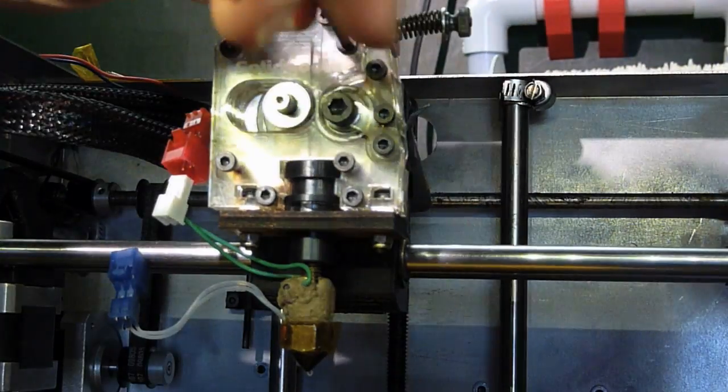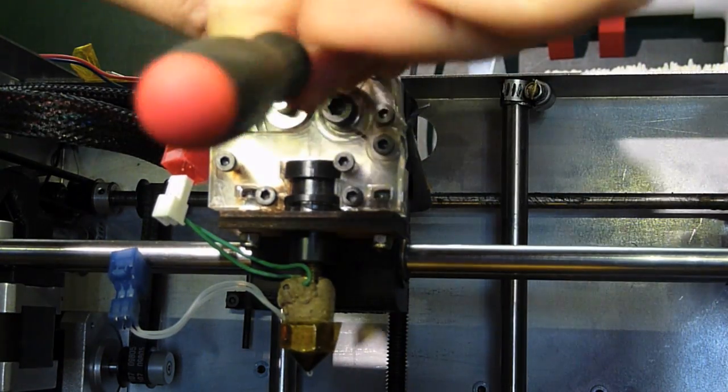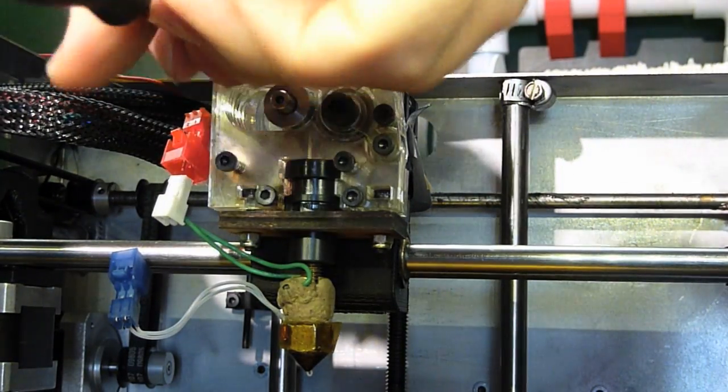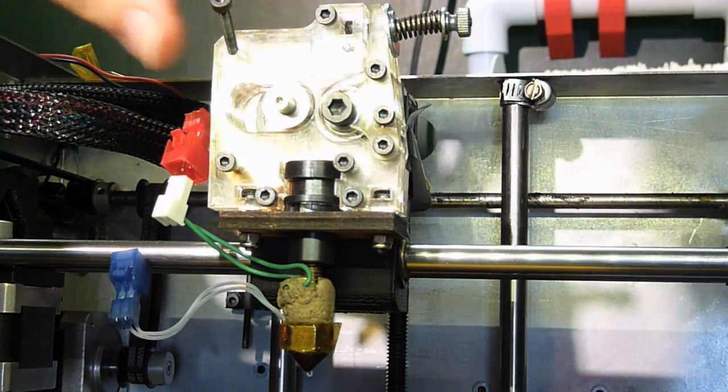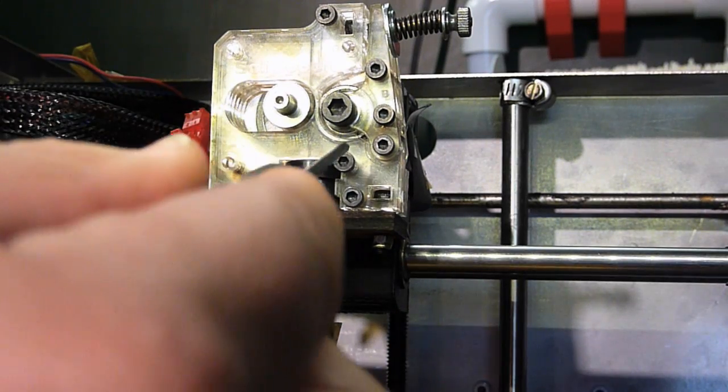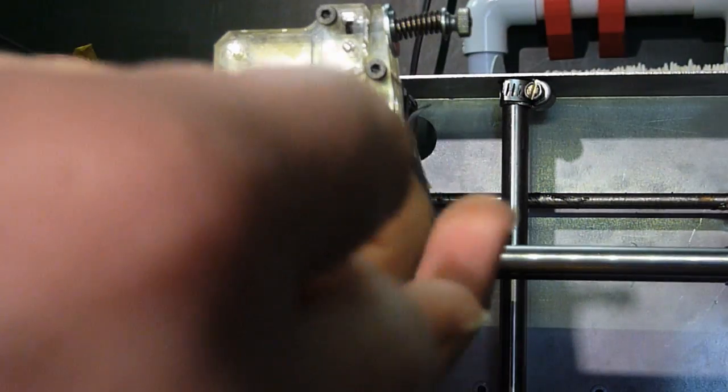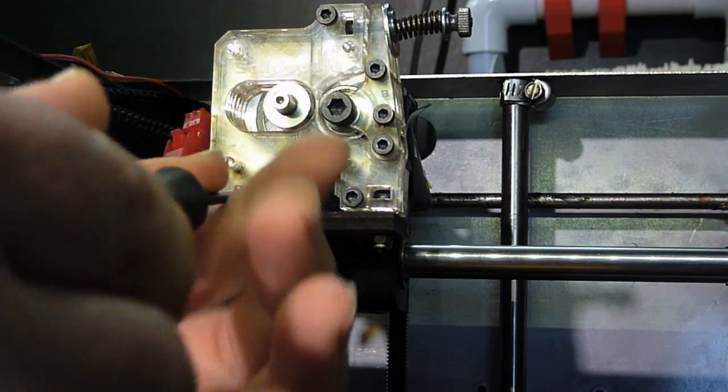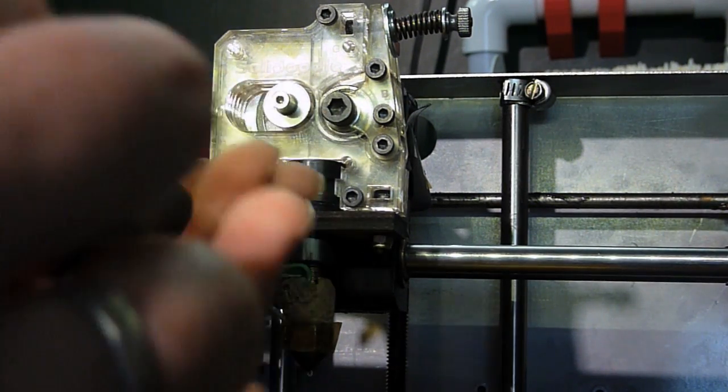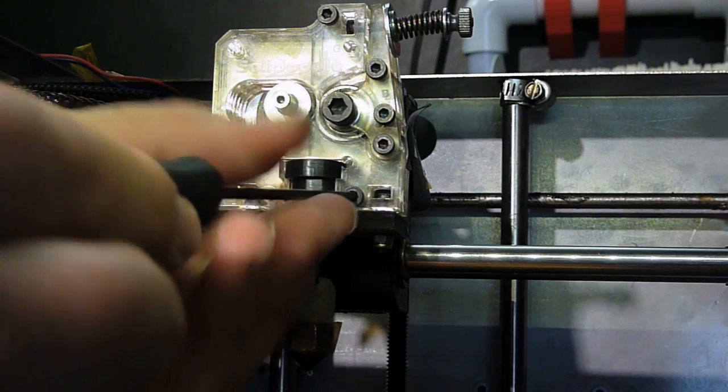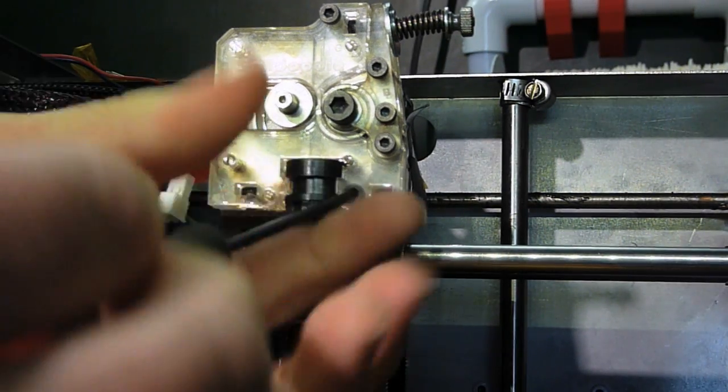And then undo the four screws that hold the motor on, and then the two screws that hold the extruder onto the X-carriage. On most printers, these actually will be nuts. This is an earlier model where the screws face the other direction.